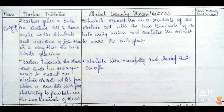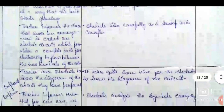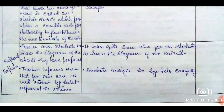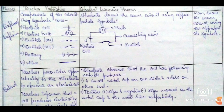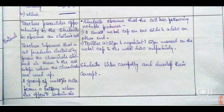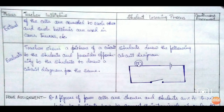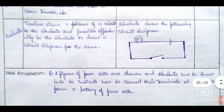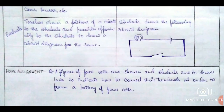Here is our first table. We start with engaging the learners. Once the learners are paying attention to the class, we move on to explore and explain. Explore and explain continues in the next page as well. And then we move on to extend, continuing with extend, and finally we move on to evaluate.